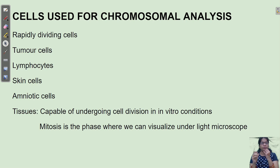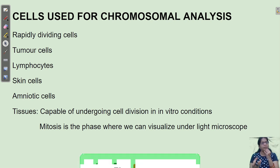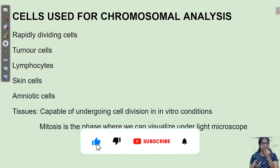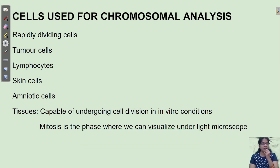To detect the karyotype, you should have rapidly dividing cells. Mitosis is a rapid division of cells, and the metaphase condition should be observable during karyotyping. Tumor cells have a high rate of multiplication. Lymphocytes — T lymphocytes and B lymphocytes — skin cells, and amniotic cells are sample cells where rapid division occurs, allowing us to arrest the metaphase.